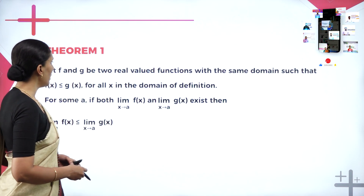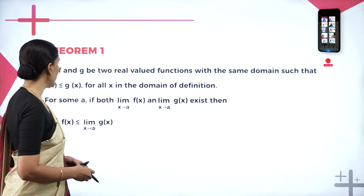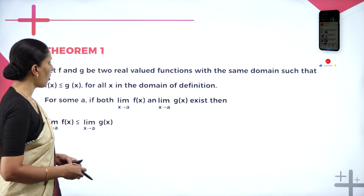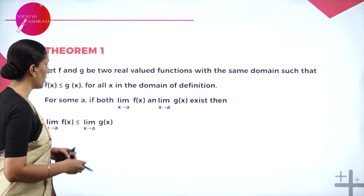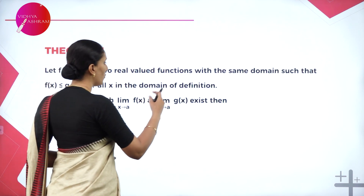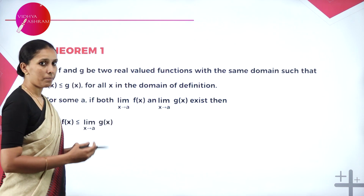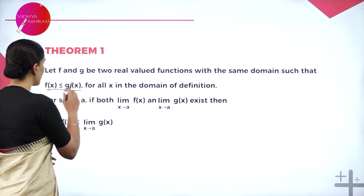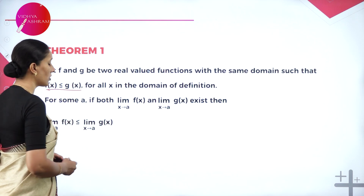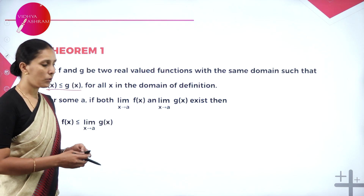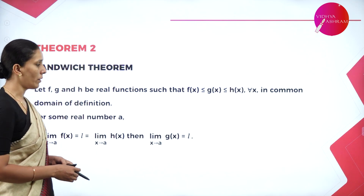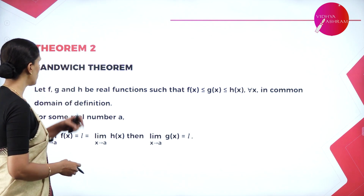Let F and G be two real-valued functions with the same domain such that F of X is less than or equal to G of X for all X in the domain of definition. Now if the limit of F of X exists and limit of G of X exists as X approaches A, then since F of X is less than or equal to G of X, we have limit of F of X less than or equal to limit of G of X. This theorem helps us learn one more theorem called the sandwich theorem.